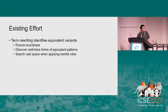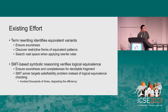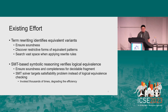Existing approaches include term rewriting-based methods, which ensure soundness because the transformation process preserves semantic equivalence. However, they can only discover very restrictive forms of equivalent patterns and suffer huge overhead from the vast search space when applying rewrite rules. SMT-based symbolic reasoning tries to verify equivalence by determining whether symbolic representations are logically equivalent, ensuring soundness and completeness for the decidable fragment. But the SMT solver is originally proposed for satisfiability, not logical equivalence checking, making it suboptimal. The solver must be invoked thousands or hundreds of thousands of times, degrading overall efficiency.